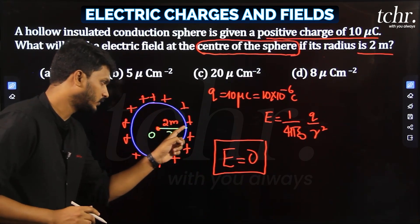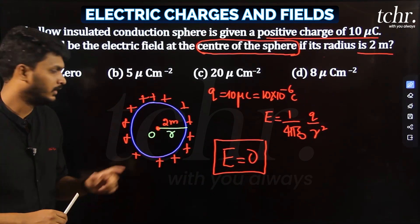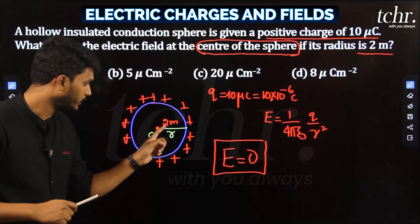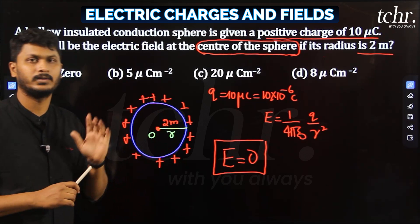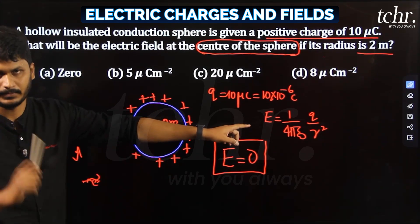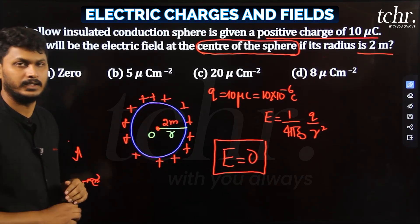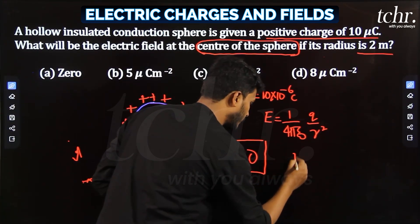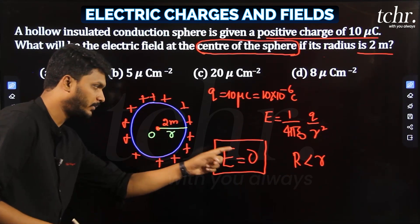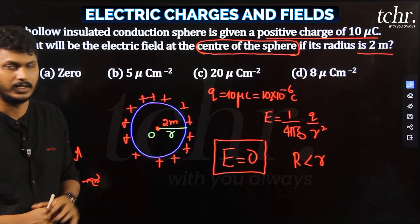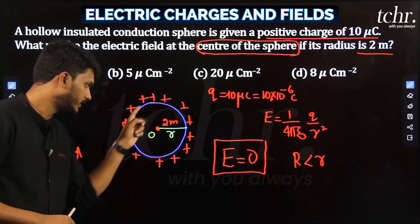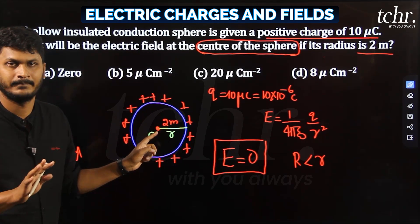Don't get confused by the 2-meter radius. What if the question asks: what is the electric field at 1 meter from the center? 1.5 meters? 1.9 meters? For all such questions, if the point lies inside the radius - if it's lying less than the radius - the electric field is always zero.